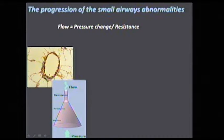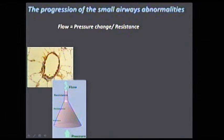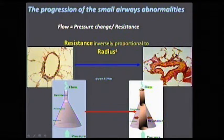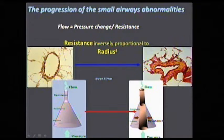In summary, what happens is that from this airway that was nice and open with a very large cross-sectional area, we slowly — over years — go to an airway that is very narrow with a very narrow cross-sectional area and a very large increase in resistance, producing the loss of flow.